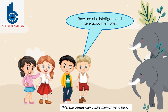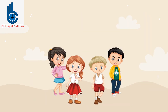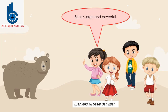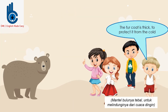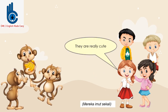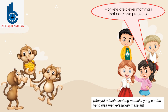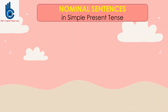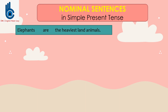They are also intelligent and have good memories. Tigers are the biggest of all cats. Bear is large and powerful. The fur coat is thick to protect it from the cold. They are really cute. Monkeys are clever mammals that can solve problems. In the previous dialogue, we can see there are some examples of nominal sentences in simple present tense.